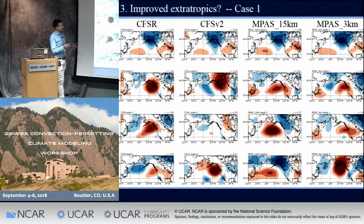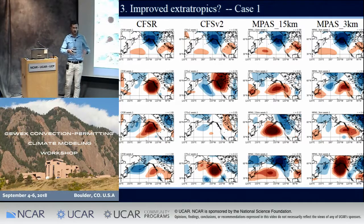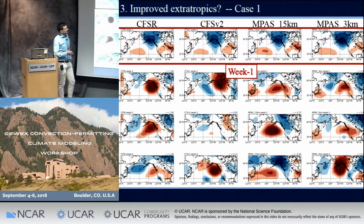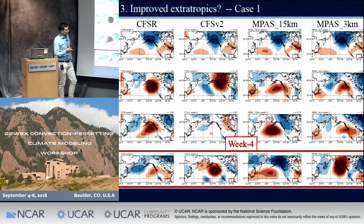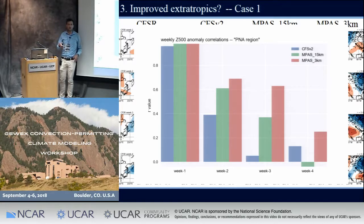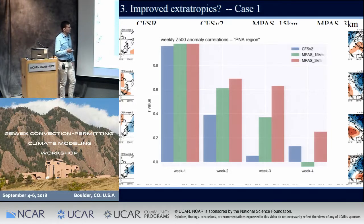The last question is how we've done in the extratropics. We're looking at deterministic skill — specifically weekly averaged 500-millibar height anomalies in the PNA region, which is largely affected by the MJO, using CFSR as our benchmark. For case 1, the 3-kilometer MPAS simulation does a better job simulating the extratropical pattern than our other two runs in weeks two through four. Whether this is connected to simulating the MJO better is a harder case to make — we don't really know what percentage of extratropical variability is controlled by the MJO — but we want to draw that bridge, perhaps by looking at Rossby wave source.